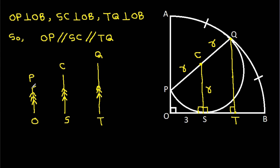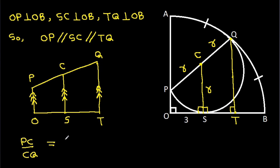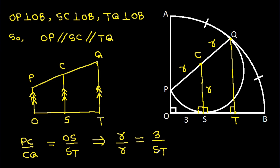Since OP, SC, and TQ are parallel, we get PC over CQ equals OS over ST. Since PC is R and CQ is R, we have R/R = 3/ST, which gives us ST = 3.